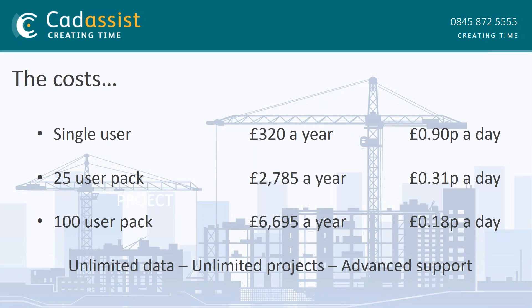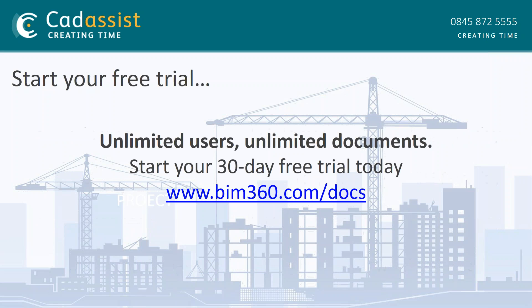As for pricing, a single user licence starts from £320 a year. A 25-user pack is £2,785 a year. A 100-user pack is £6,695 a year, which gives you unlimited data for unlimited projects and also includes advanced support from Autodesk. Like most Autodesk software, you can take out a 30-day free trial by going to www.bim360.com/docs. If you decide to continue, we can get your data transferred across onto a paid account.